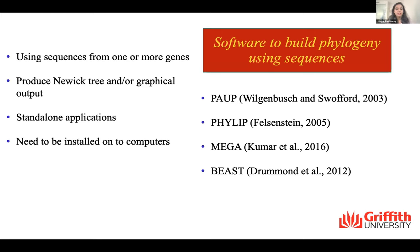Let's have a quick look at some example software and the advantages of each input type. For gene sequences, existing software that processes one or few genes produces output in the form of a Newick tree or graphical format, and the majority are standalone applications that need to be installed — examples include PaupFull, PHYLIP, MEGA, and BEAST. For genome sequences, since whole genomes are provided, this is predominantly used for interspecies phylogeny — software such as RAxML, ExaML, and MrBayes are examples. These are also standalone applications to be installed or accessed through servers or the cloud.